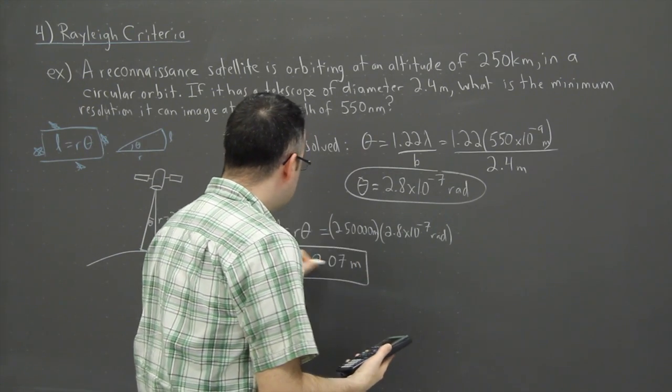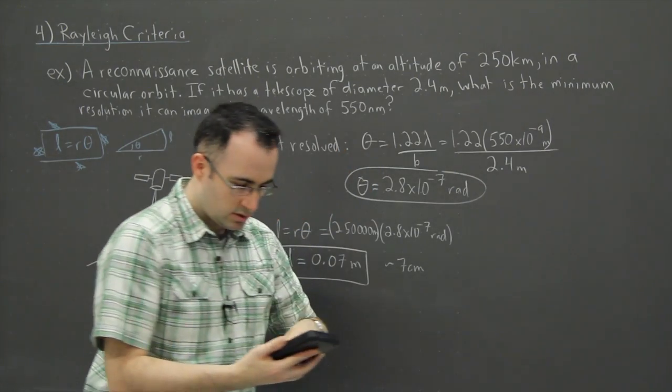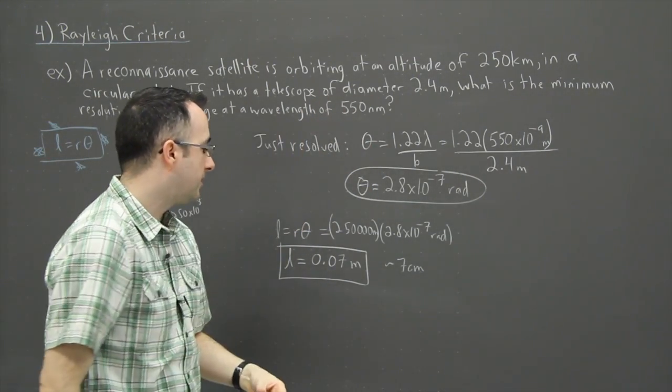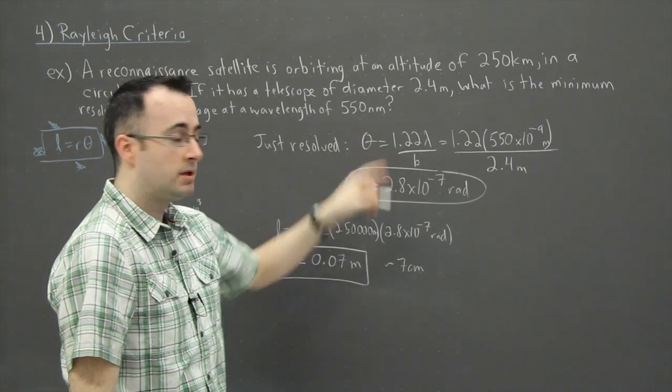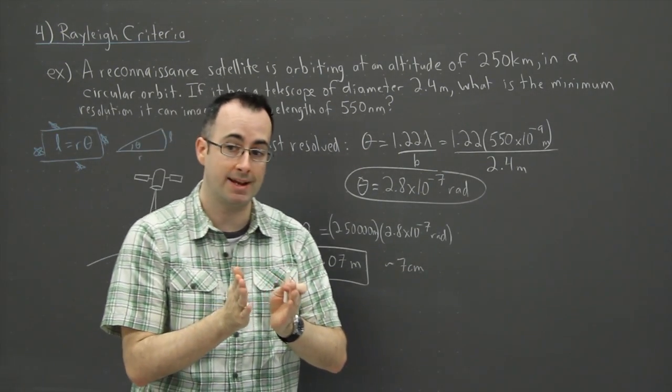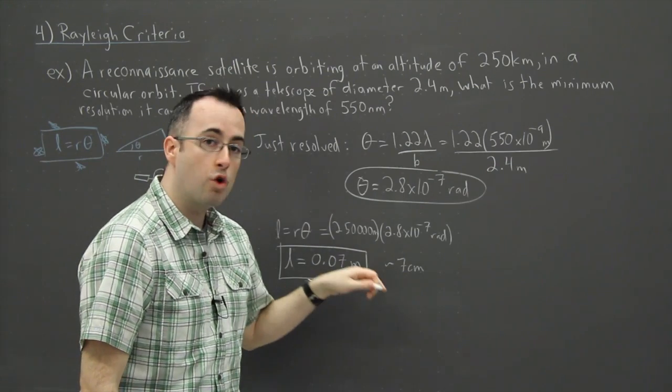In other words, that's seven centimeters. So this telescope at this distance, at that wavelength, which seems reasonable, can only image things. In other words, it can only tell apart two things that are seven centimeters away. In fact, it's worse than that. This is what we call the diffraction limit. In other words, this is as good as you could get in theory.